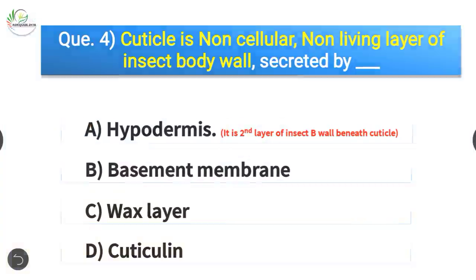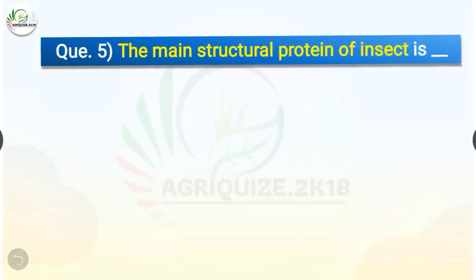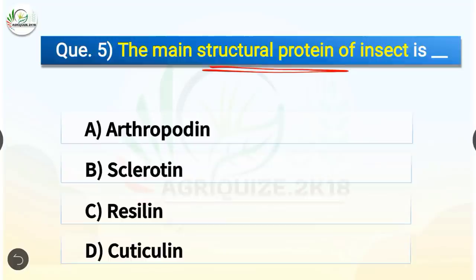Question number 5. The main structural protein of insect is what? The options are arthropodine, sclerotin, resilin, or cuticulin. The correct answer is option A, arthropodine. The main structural protein of insect is arthropodine.